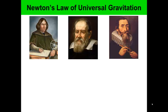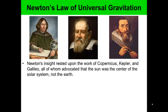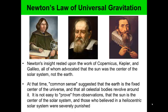Newton's insights rested on the work of Copernicus, Kepler, and Galileo, all of whom advocated that the Sun was the center of the solar system, not the Earth. At the time, common sense suggested the Earth was fixed at the center of the universe. It was not easy to prove the heliocentric model, and those who believed in a Sun-centered solar system were severely punished.